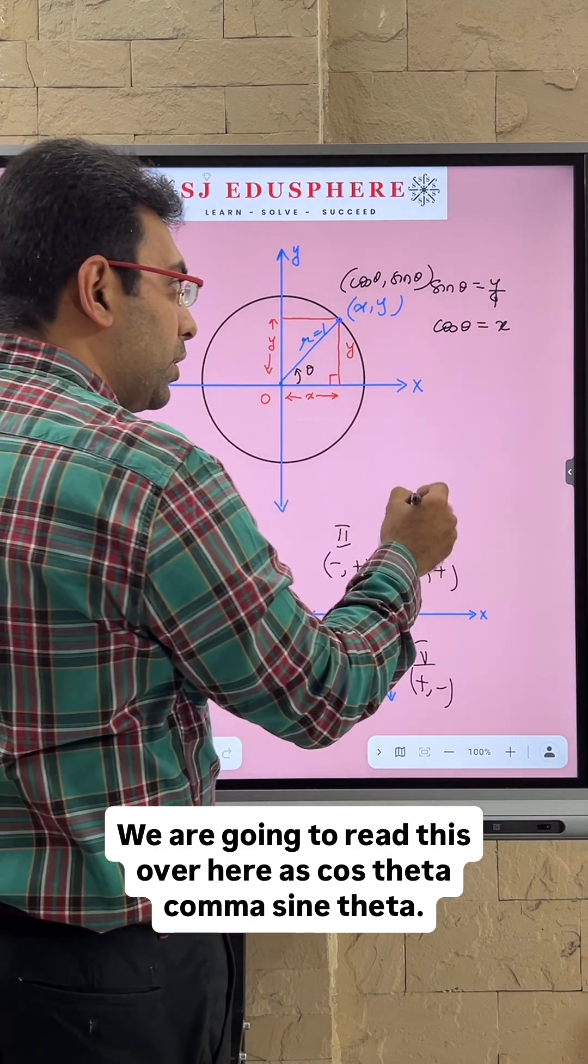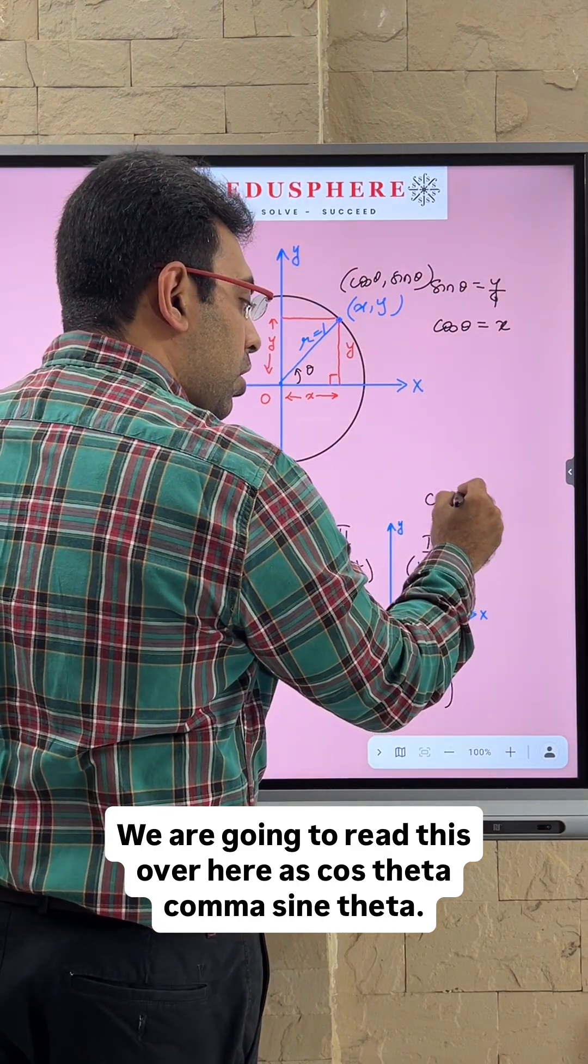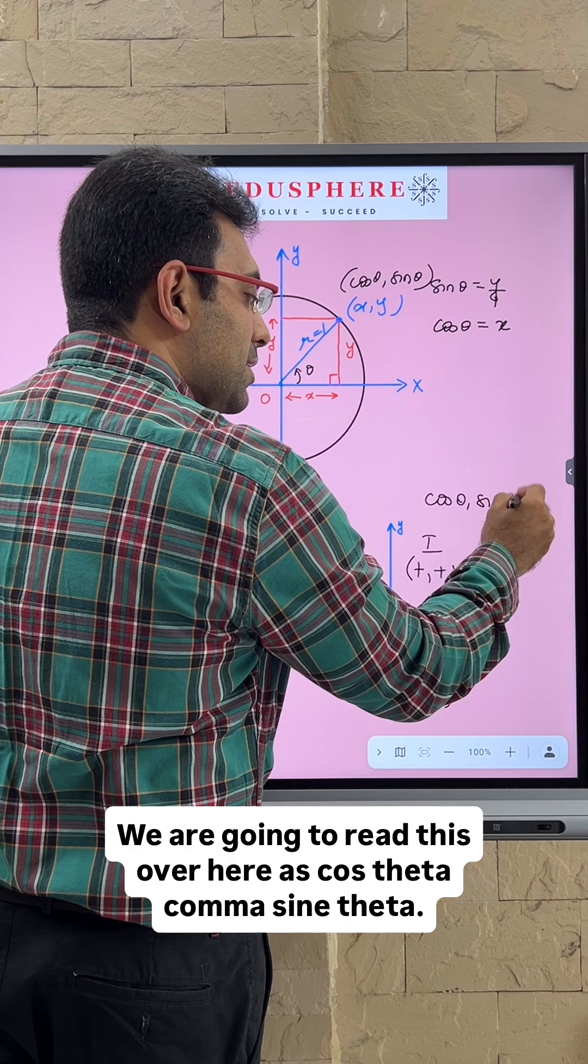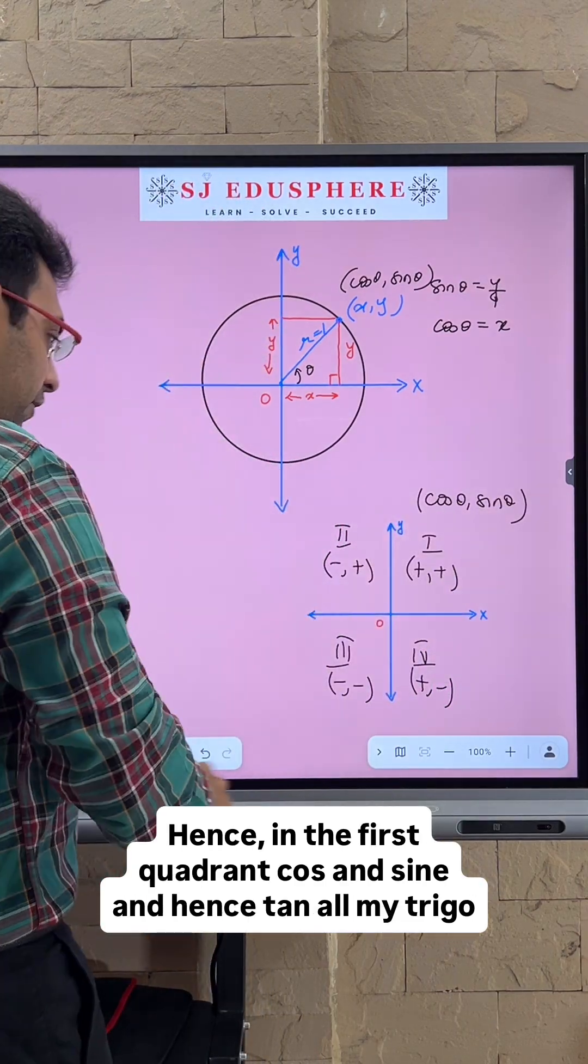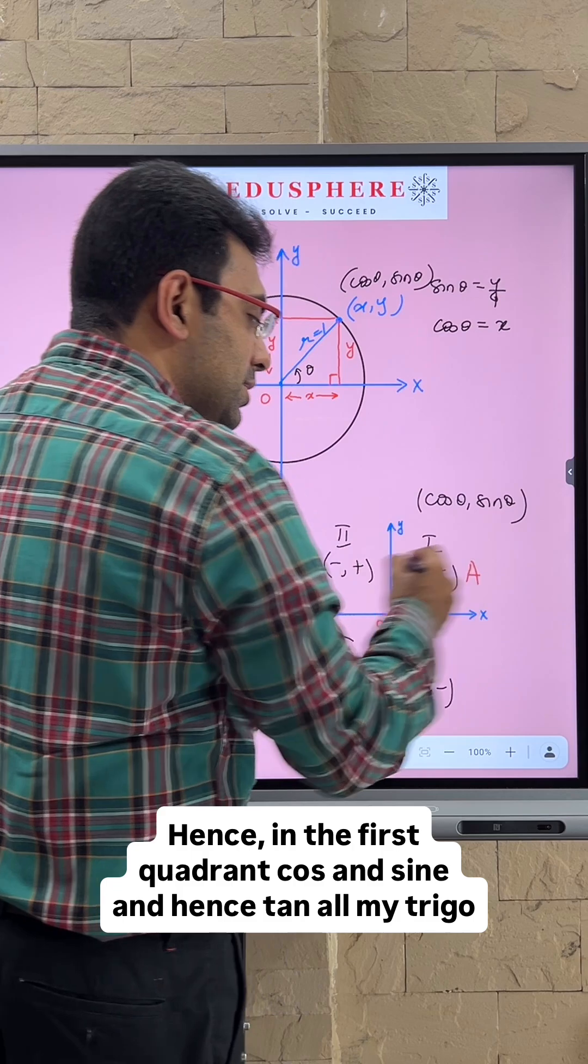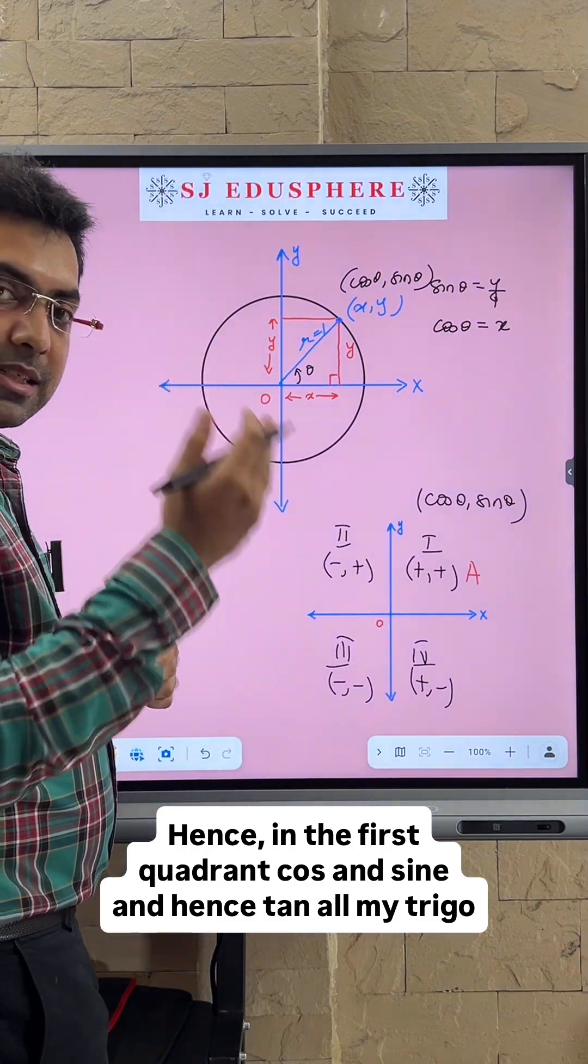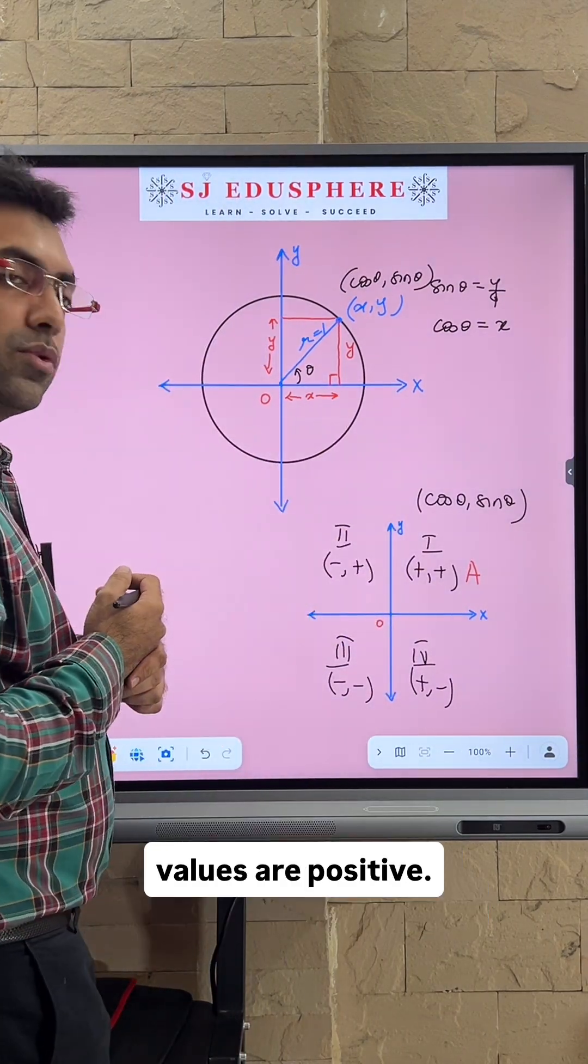We are going to read this as cos theta, sine theta. Hence, in the first quadrant, cosine and sine, and therefore tangent, all my trigonometric values are positive.